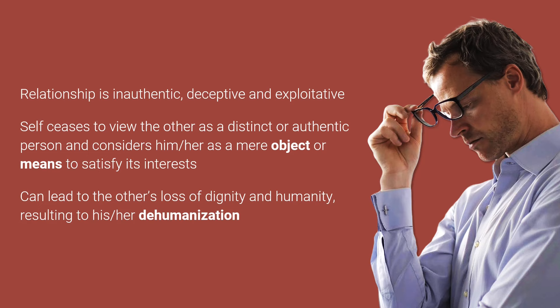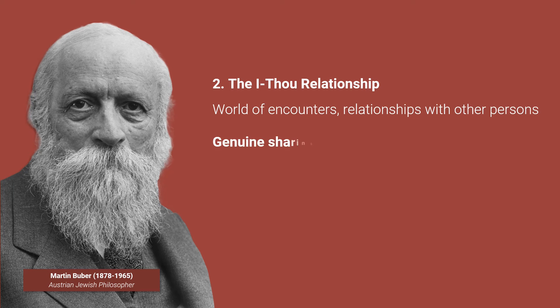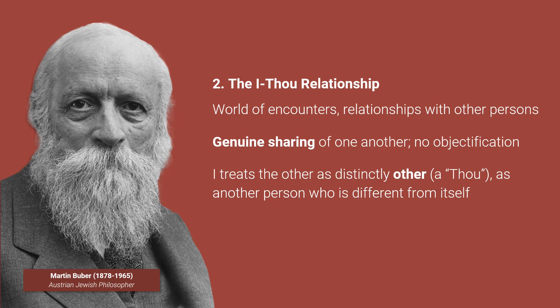The second way the self relates with the other is the I-thou relationship. In contrast to the I-it relationship, the I-thou refers to the world of encounters and relationships with other persons. It is a relationship where there is a genuine sharing of one another, without objectification. In this relationship, the I treats the other as distinctly other — a thou — as another person who is different from itself, as someone who has different characteristics, beliefs, values and interests. At its center is a genuine form of interaction: a dialogue.